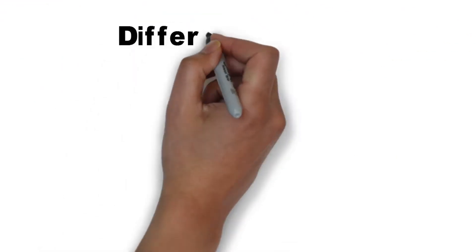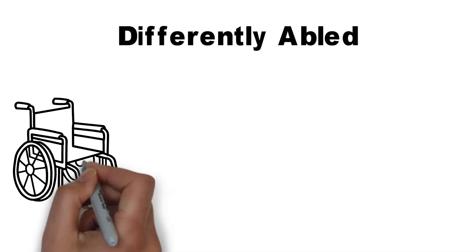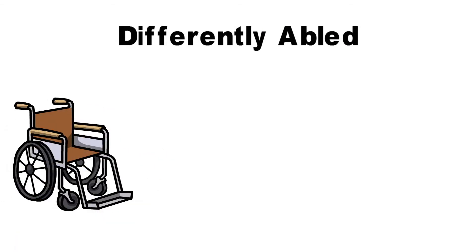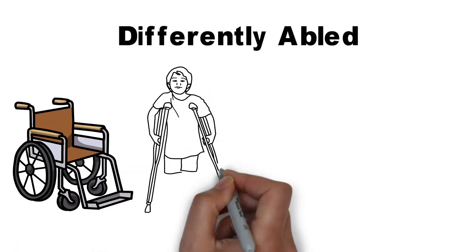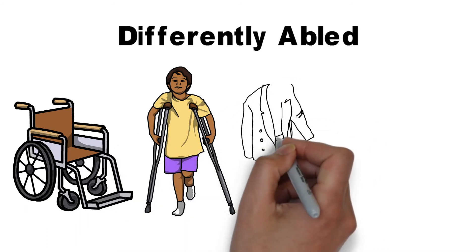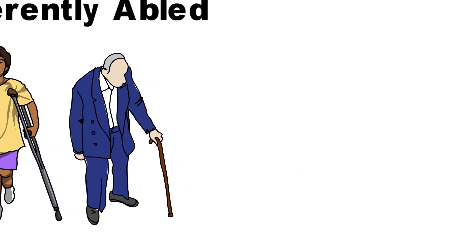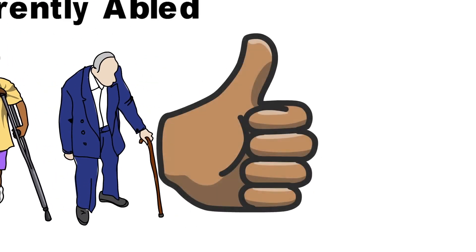Another type of diversity you might see is with differently abled people. Someone who is differently abled might need help or do something in a different way than you would. For example, instead of walking, someone who is differently abled might use a wheelchair to get around. People can be differently abled due to how they were born, aging, or maybe if they had an accident throughout their lifetime. Either way, they can do just as much as you, but they just have a different way of getting the job done.